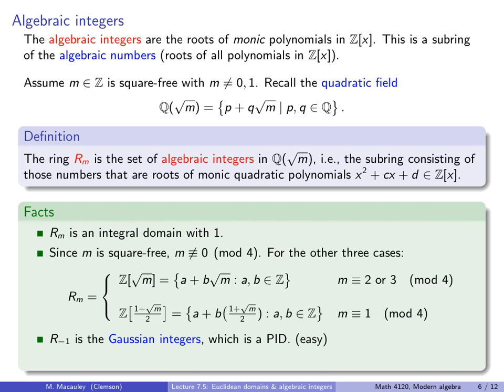R(−1) is the Gaussian integers, which we have seen previously, and it's easy to show that it is a PID. What's much harder to show is that R(−19) is a PID. And I mention this particular ring because it turns out it is not a Euclidean domain — making it the simplest example of a ring that is a PID but not a Euclidean domain.